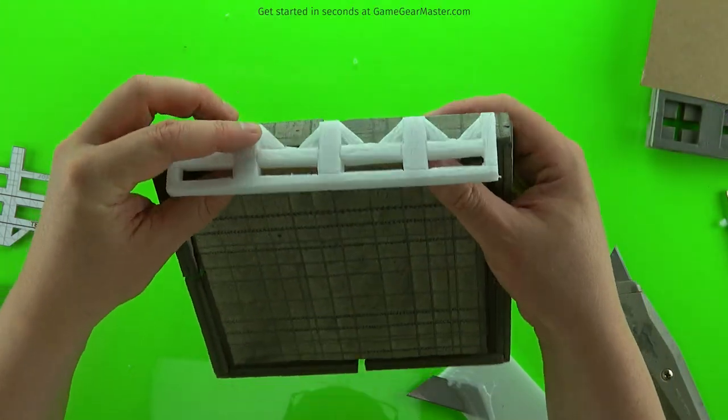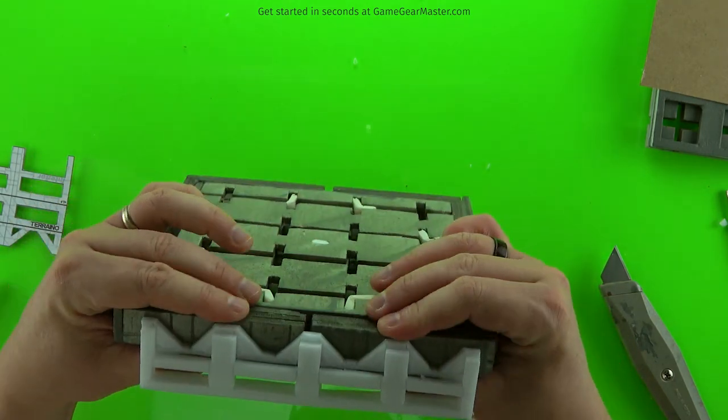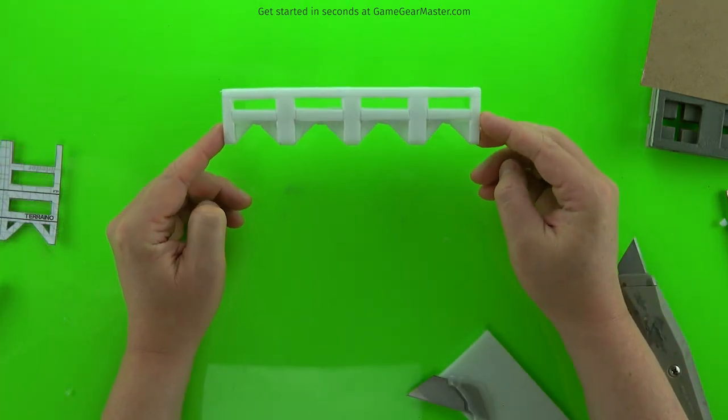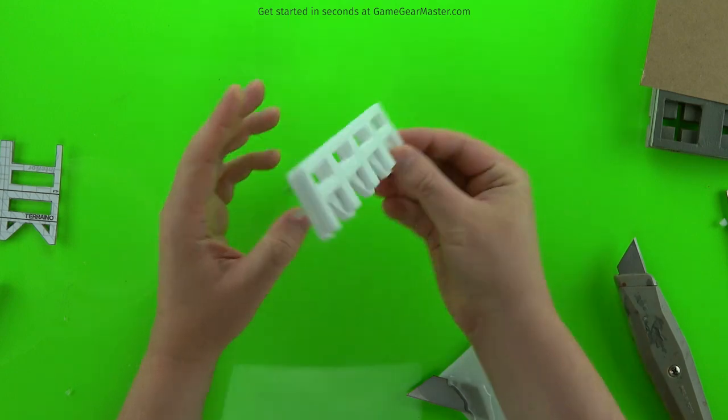And then just give it a test fit. Here I'm test fitting it on the modular grid borders. It also works on regular floor tiles too. The border on those will fit this as well.